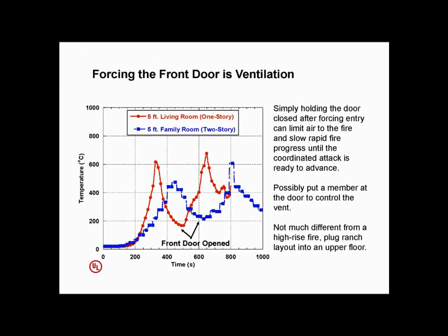Forcing the front door is ventilation. We've overlooked this for some time. Do we teach fire behavior with forcible entry? Probably almost never. However, a doorway is the best possible way to ventilate a ventilation-limited fire — it goes all the way to the ground, which is ideal. Air can go in low and hot gases can come out high. It's one of the most efficient ways to grow a fire. If you've got a ventilation-limited fire, from the moment the front vent gets opened until flashover, you're looking at 60 seconds to two and a half minutes, depending on a couple of variables, just by opening the front door.